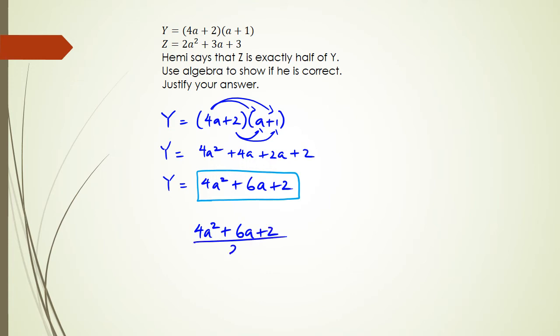Now because the whole quadratic is being divided by 2, I could actually just divide each of the terms by 2 and see what happens. As you can see, I'm actually getting 2a squared plus 3a.